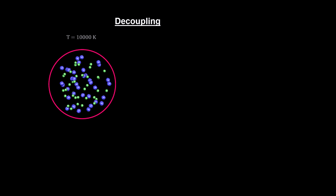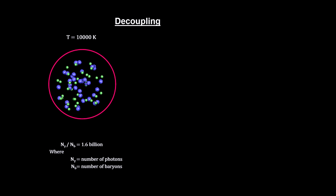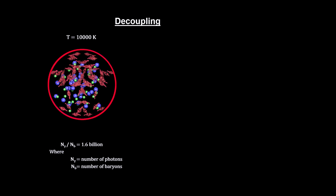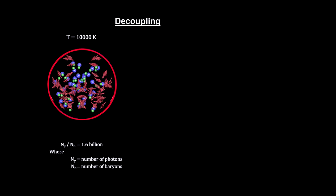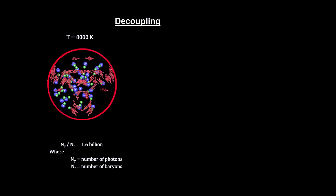In addition to all the electrons and protons in the universe packed into this relatively small space, there were around 1.6 billion photons for every baryon in the universe. Baryons are the protons and neutrons in the plasma.